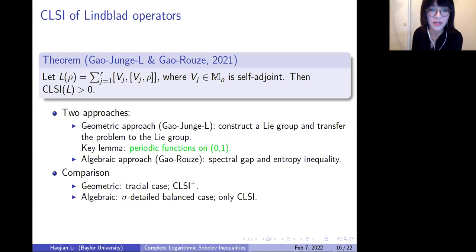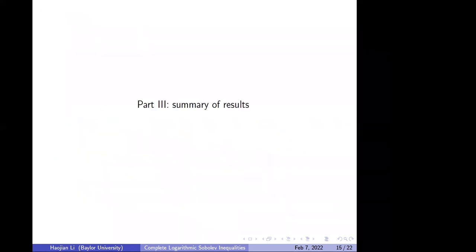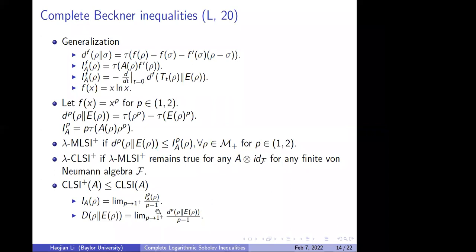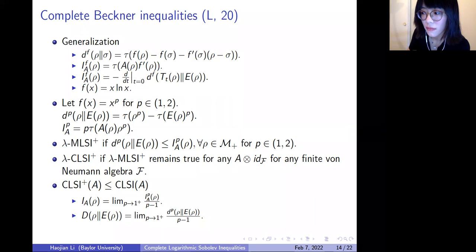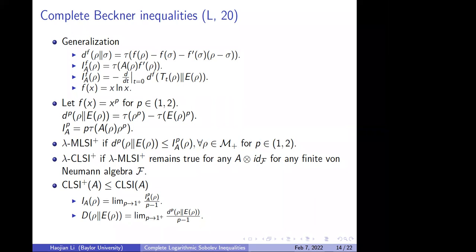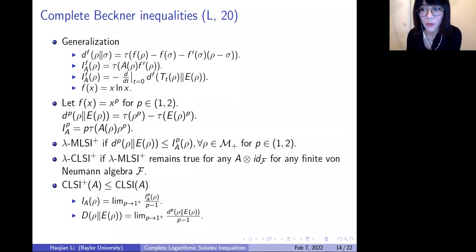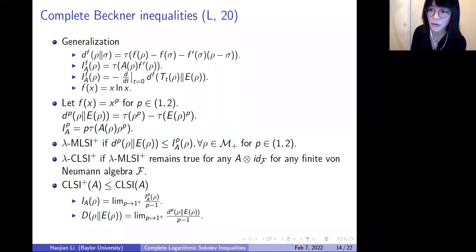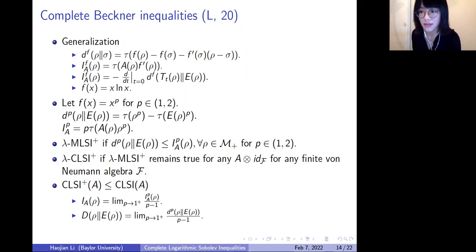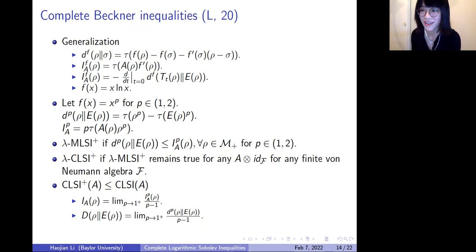There is also a question about sharp constants for concrete semigroups in the Beckner inequality. For some semigroups we know really good constants, but for some we know they are not sharp. For some semigroups we obtain constants which are the same as MLSI, and I will mention that in the summary of results.